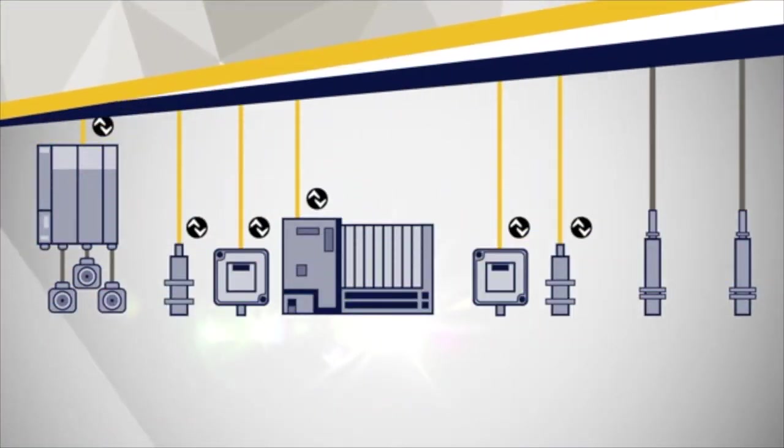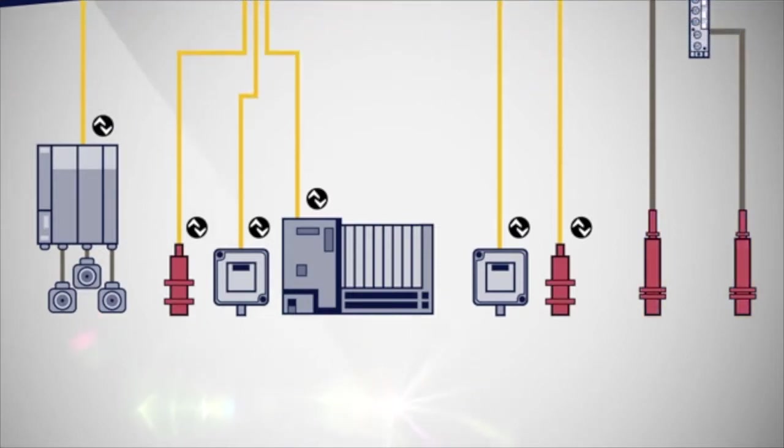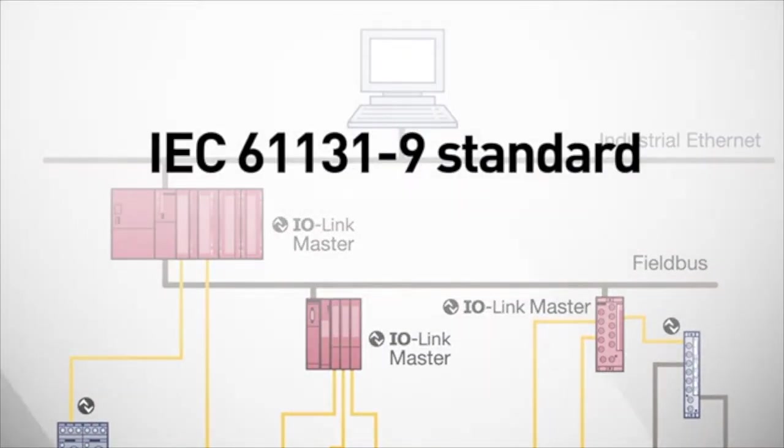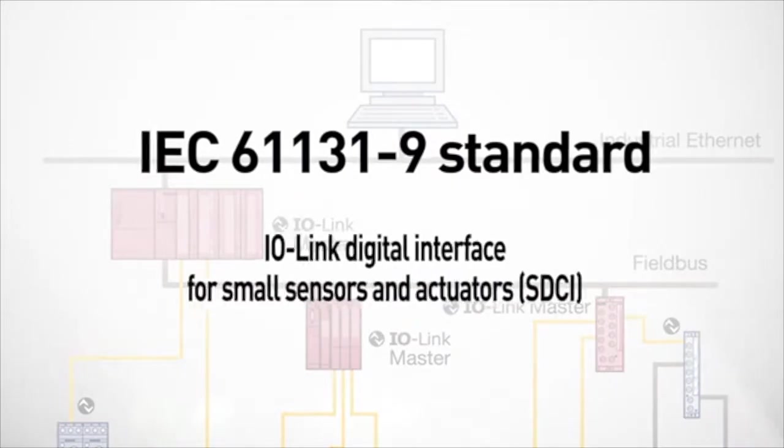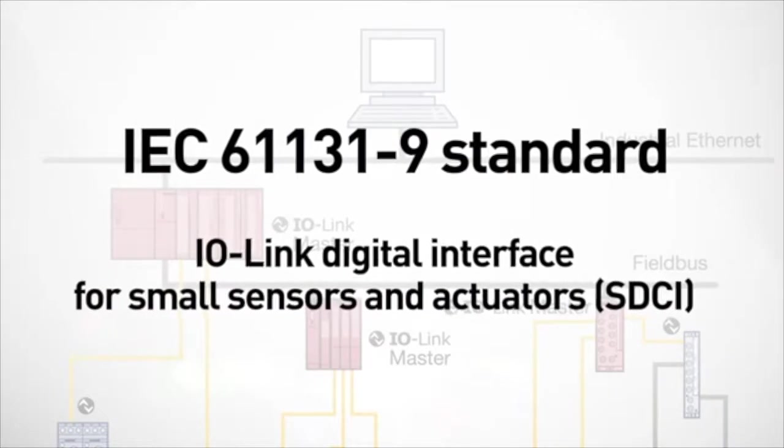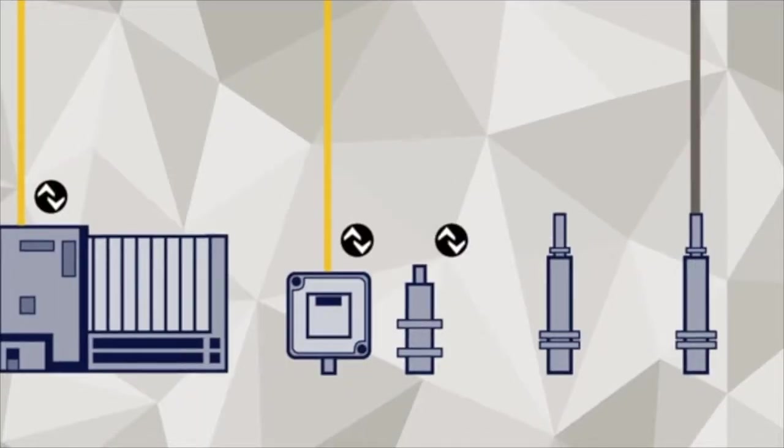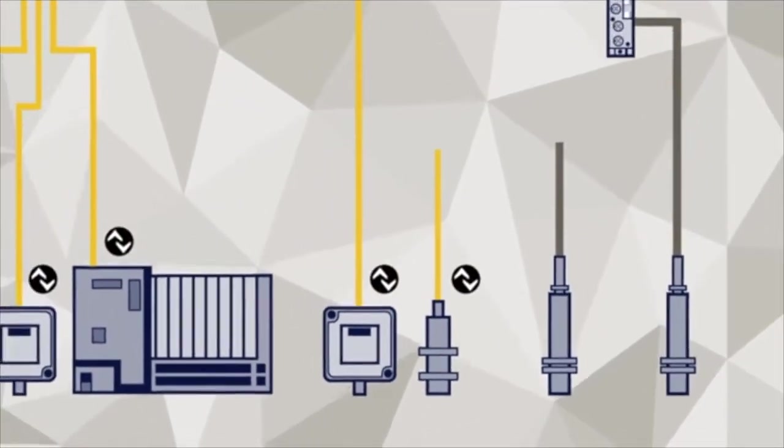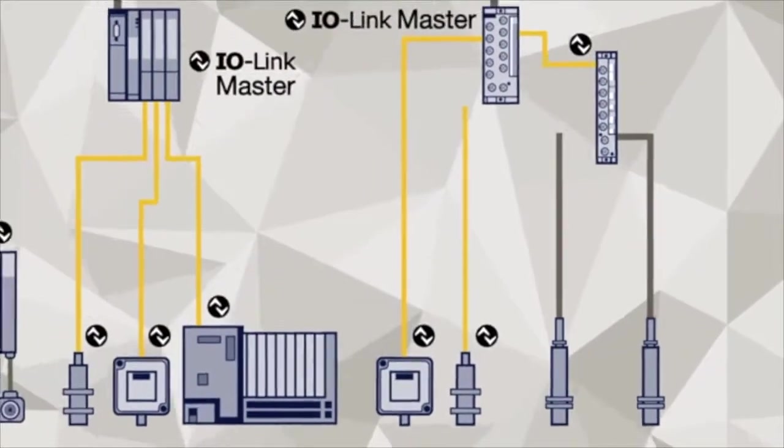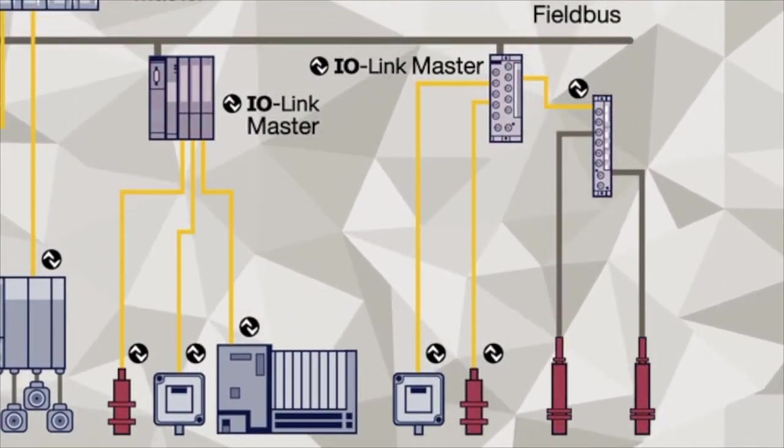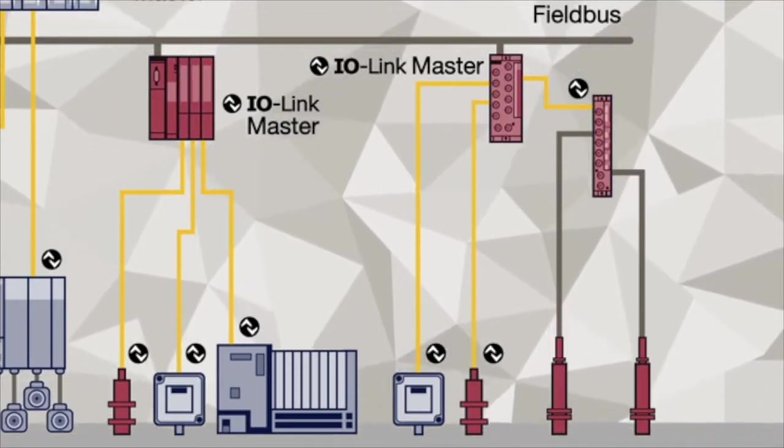IO-Link is a communication system for the connection of intelligent sensors and actuators to an automation system in the IEC 61131-9 standard under the name of the IO-Link Digital Interface for Small Sensors and Actuators. The standardization includes both the electrical connection data as well as a digital communication protocol via the sensors and actuators which can communicate with the automation system in data exchange.